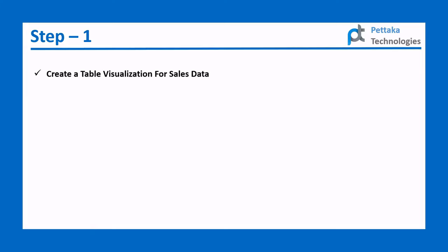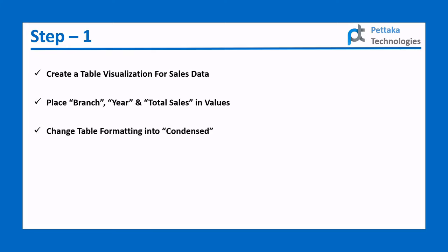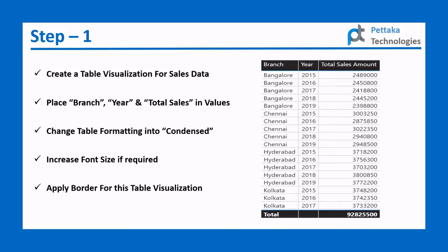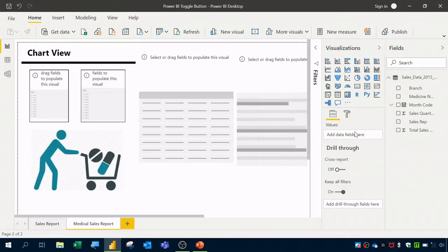For the sales data, place Branch, Year, and Total Sales in Values. Change the table formatting style to Condensed, increase the font size if required, and apply a border for the table visualization. The final visual will look like this.